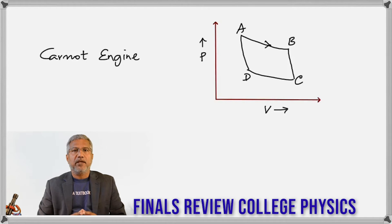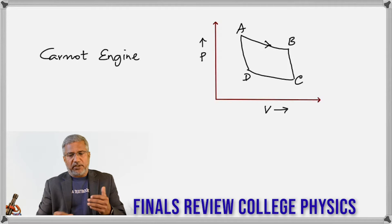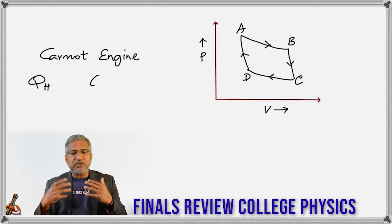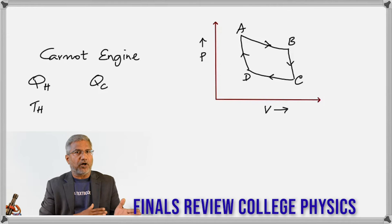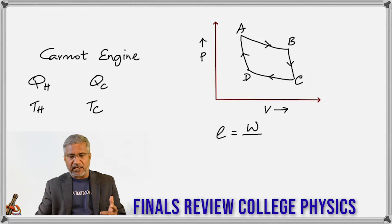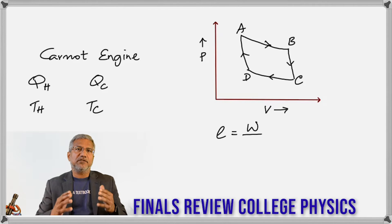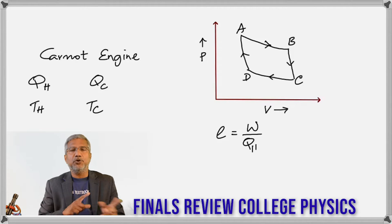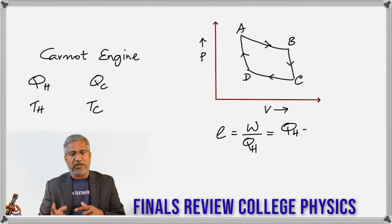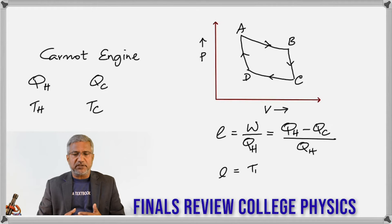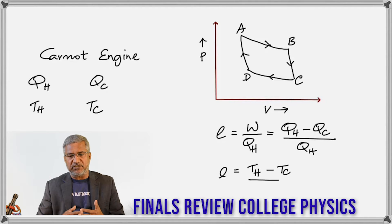For the efficiency: if QH is the heat absorbed and QC is the heat rejected — H for hot, C for cold — and the temperatures are TH and TC, then efficiency can be written in three ways. Efficiency equals work done over QH; since work is QH minus QC, that makes it (QH − QC)/QH. Efficiency can also be written as (TH − TC)/TH.